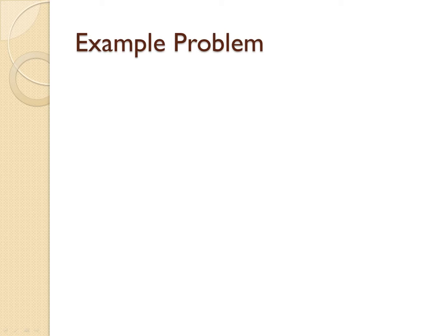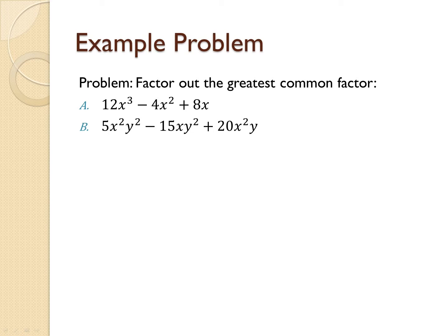So, now let's discuss our example problem, which is factor out the greatest common factor of Part A, 12x to the third minus 4x squared plus 8x and Part B, 5x squared y squared minus 15xy squared plus 20x squared y.